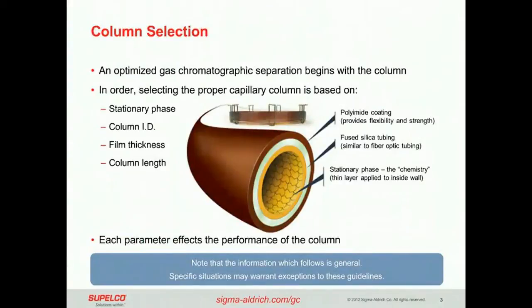An optimized gas chromatographic separation really begins with the column. The four parameters that we look at in order of priority are the stationary phase, the column ID, the film thickness, and lastly the column length. We'll discuss each one of these parameters and how it affects the performance of the column.